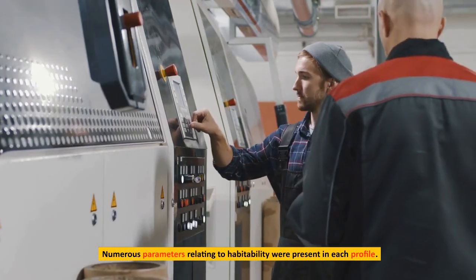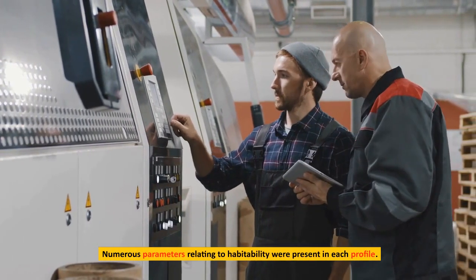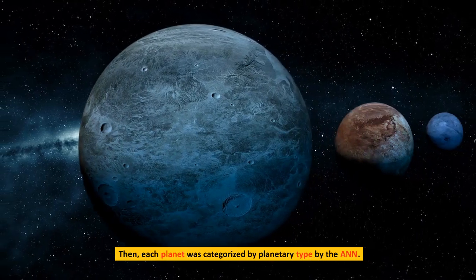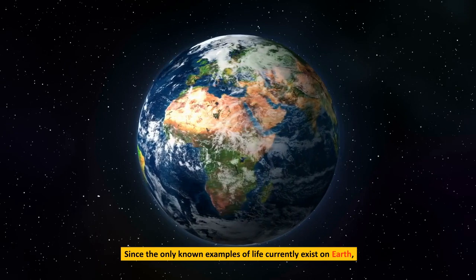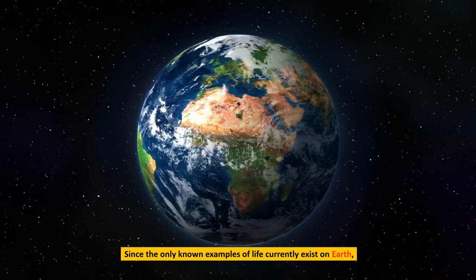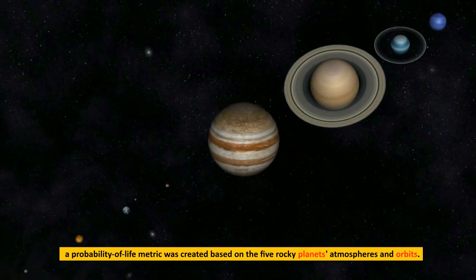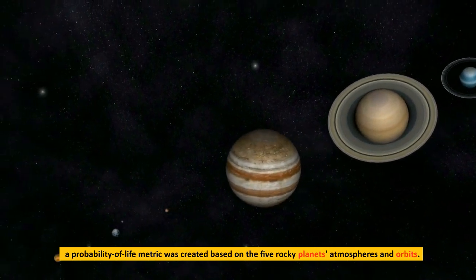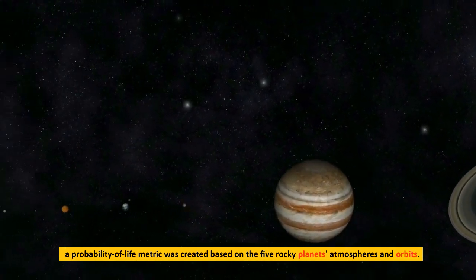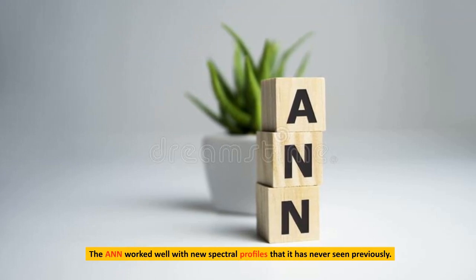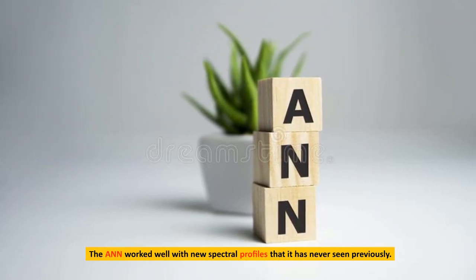Numerous parameters relating to habitability were present in each profile. Then, each planet was categorized by planetary type by the AN. Since the only known examples of life currently exist on Earth, a probability of life metric was created based on the five rocky planets' atmospheres and orbits. The AN worked well with new spectral profiles that it has never seen previously. Results thus far are good, according to project manager Angelo Cangelosi.